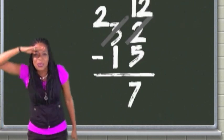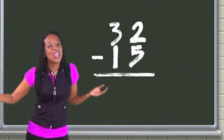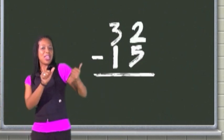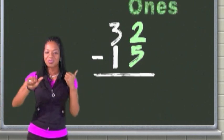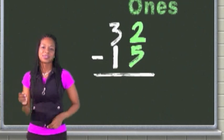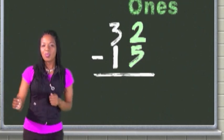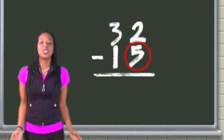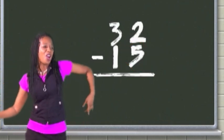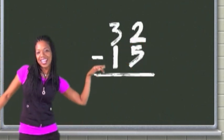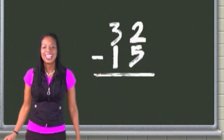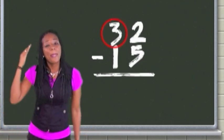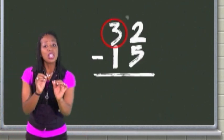Always begin the subtraction fun at the far right over there with the one. When the number on top is smaller than below, it's time to go with the regrouping flow.